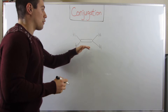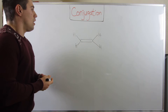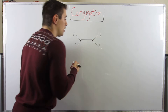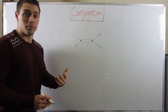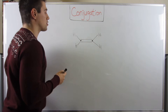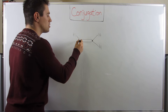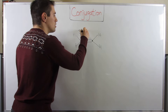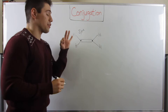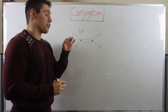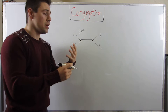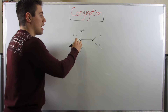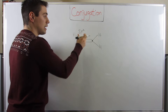We know ethene is just a two-carbon alkene. If we're going to assign hybridization to both of those carbons, we have one, two, three bonding areas. So that would be SP2 hybridized, because I have three bonding areas. That means I need three orbitals to make hybrid orbitals, which leaves us one unhybridized P orbital to help make the pi bond.